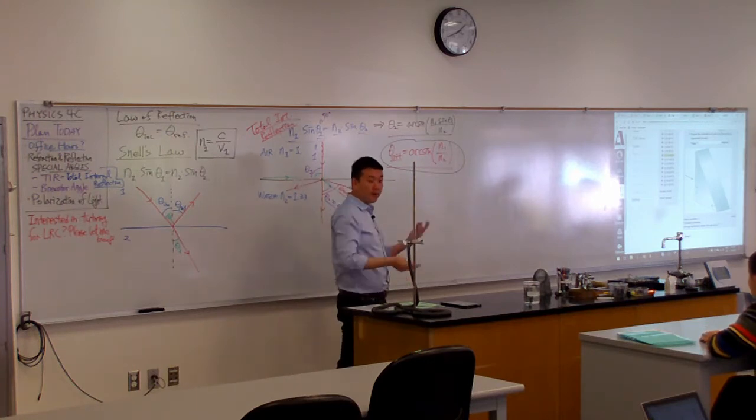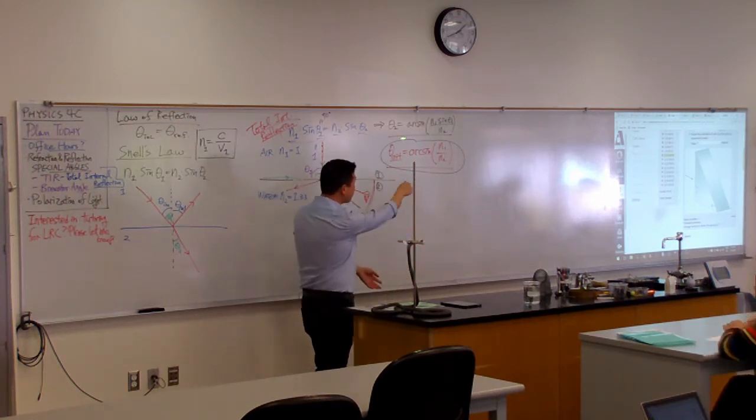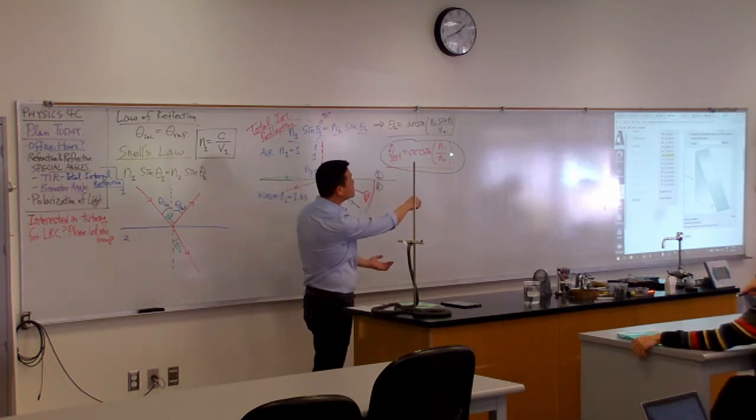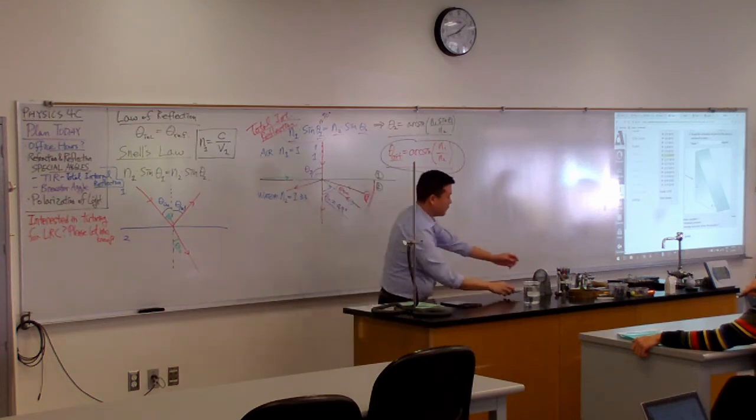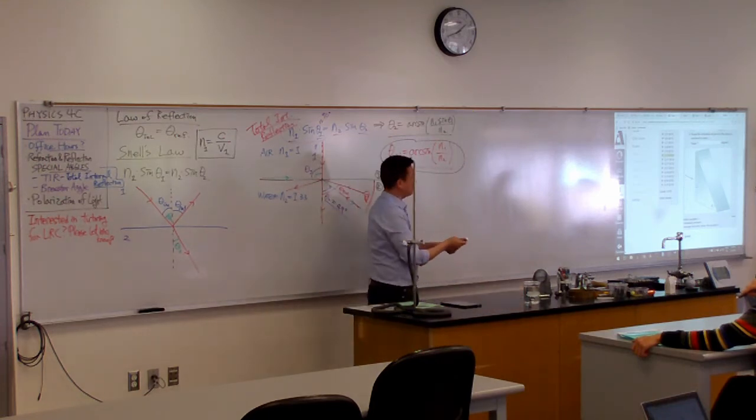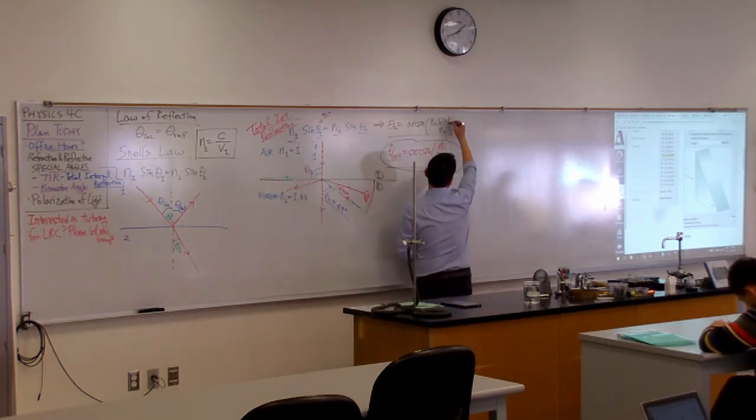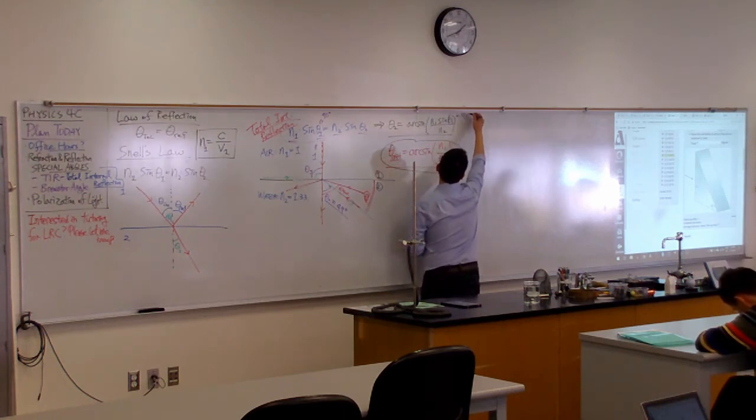And then you think about it for a while. This formula itself, it's like I never actually memorized this. Because you can get it directly from Snell's law. If you just remember that for the critical angle, what you are thinking is you want theta 1 to be 90 degrees.